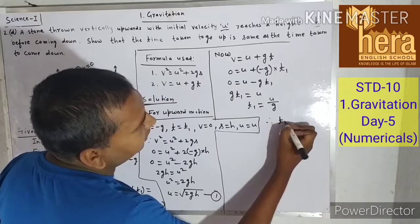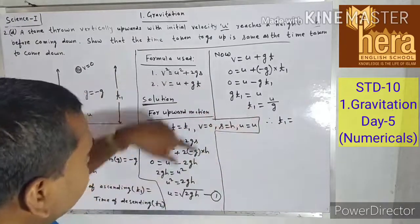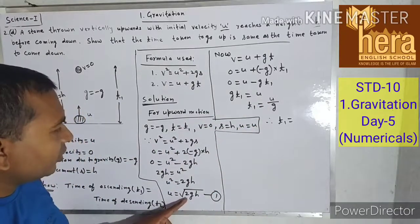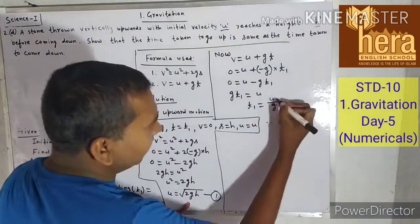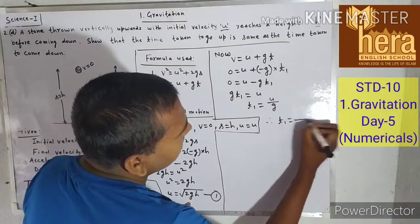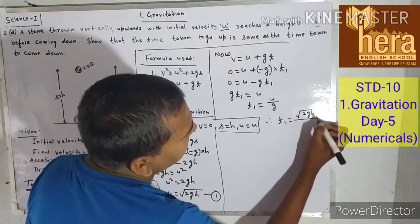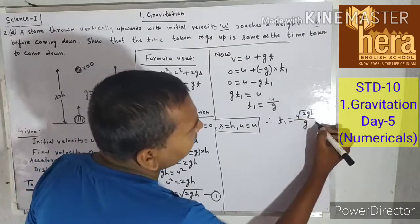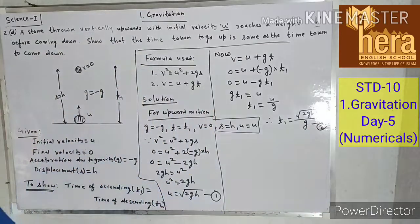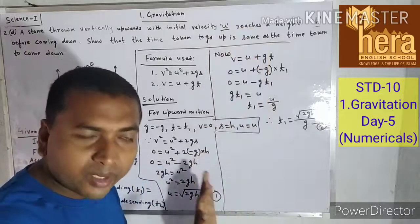Since u = √(2gh) from equation 1, substituting: T1 = √(2gh)/g. This is equation number 2, for upward motion.